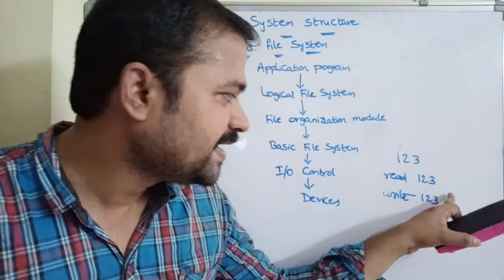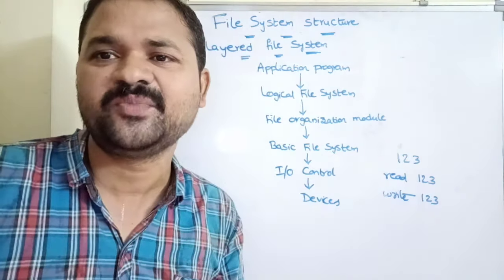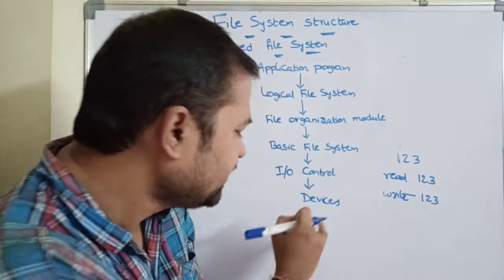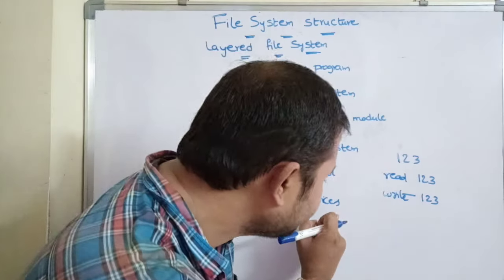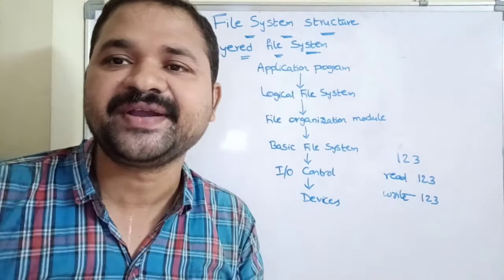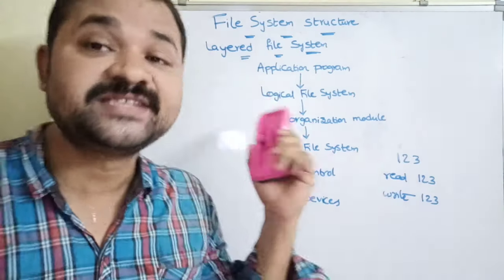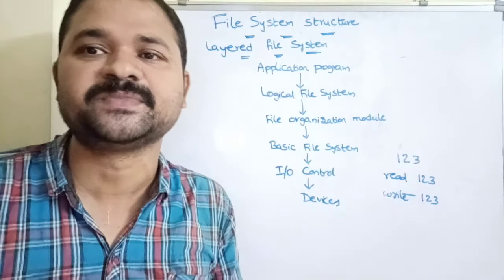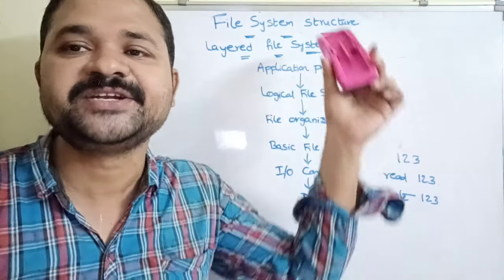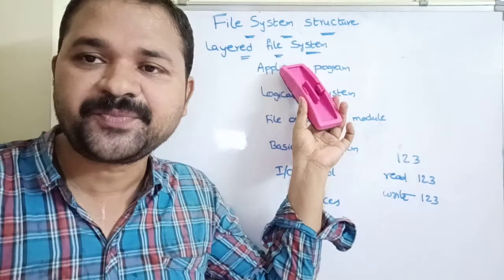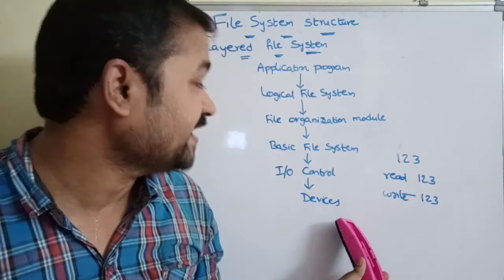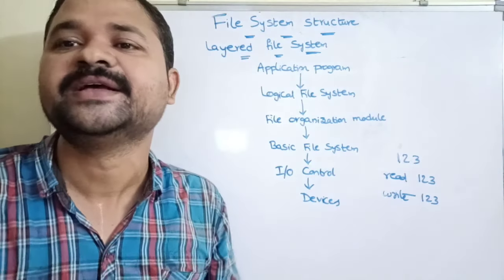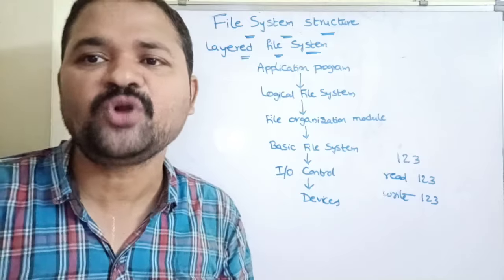The device driver files take responsibility for interacting with devices so that the corresponding operation is performed. For example, if we are reading data from a file stored on a hard disk, the hard disk driver file interacts with the hard disk to read block number 123. In order to work easily with the file system, it is organized into several layers — the top layer is the application program and the bottom layer is devices — and each layer produces output that is passed as input to the next layer.